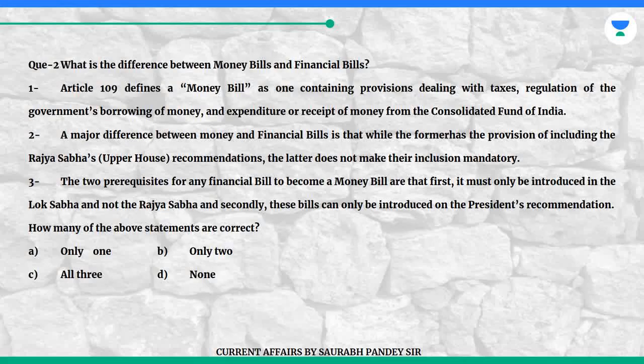Question 2: What is the difference between money bills and financial bills? Statement 1: Article 109 defines a money bill as one containing provisions dealing with taxes, regulation of the government's borrowing of money, and expenditure or receipt of money from the Consolidated Fund of India. Statement 2: A major difference between money and financial bills is that while the former has the provision of including the Rajya Sabha's (Upper House) recommendations, the latter does not make their inclusion mandatory.